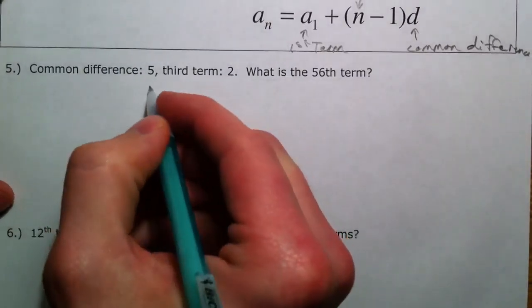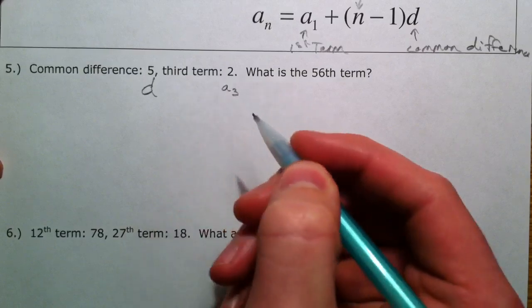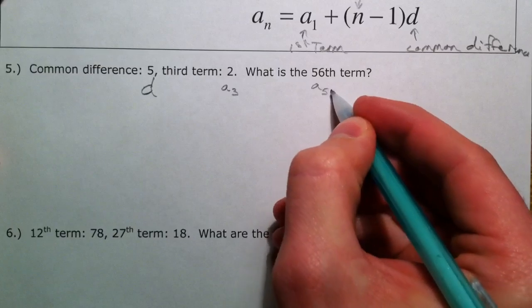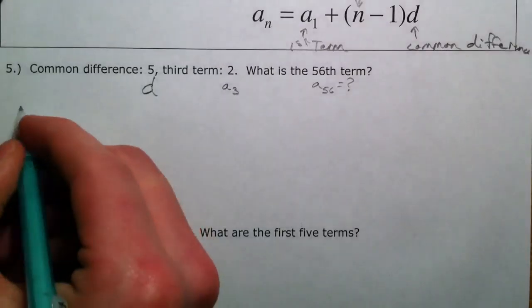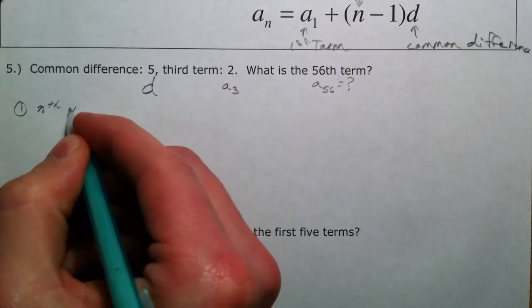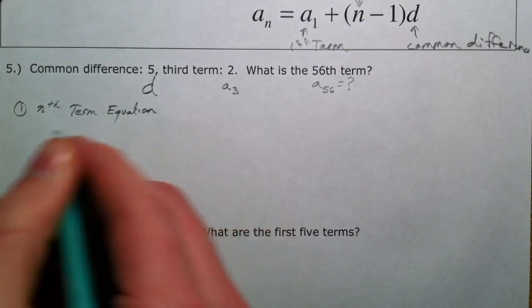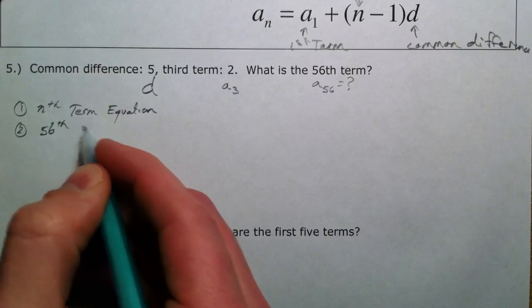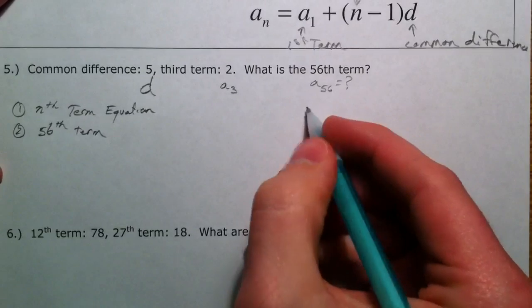So the common difference is 5, so that's d. Our third term is 2, so that's a sub 3. And then what is our 56th term? So a sub 56 is what we want to find. In order to do this, let's first find our nth term equation.